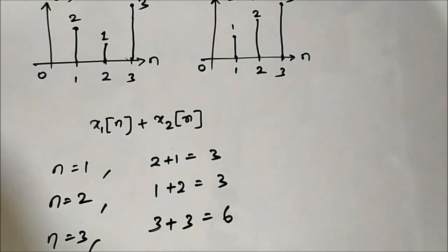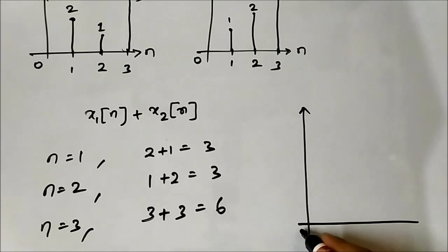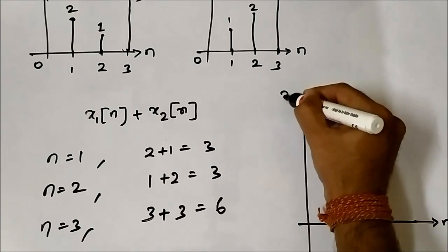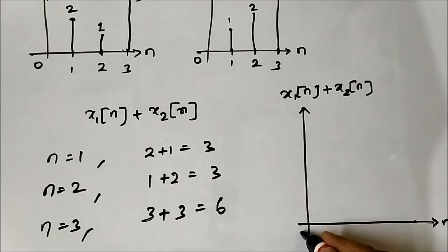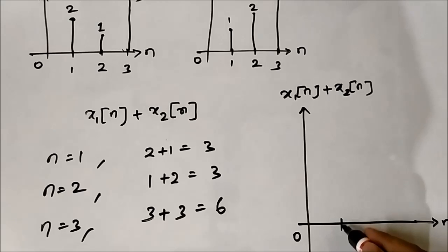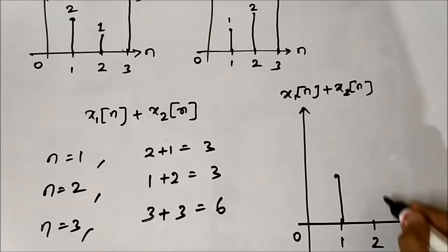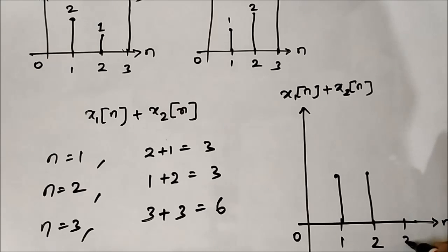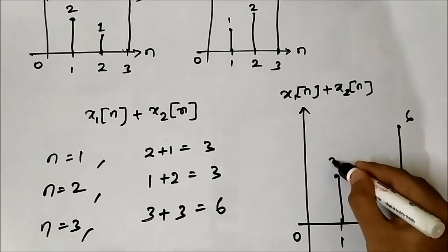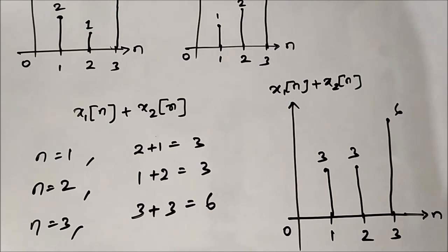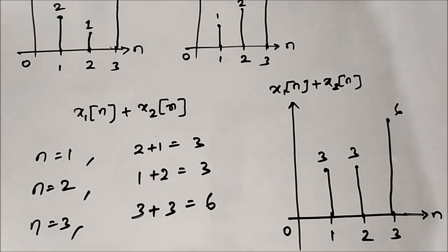At n=3, x1[n] is 3 and x2[n] is 3, so it is 6. The resultant signal: at n=1 it is 3, at n=2 it is 3, and at n=3 it is 6 — 3 plus 3 equals 6. This is the signal addition performed on discrete time signals.